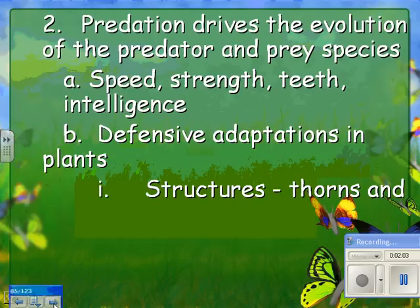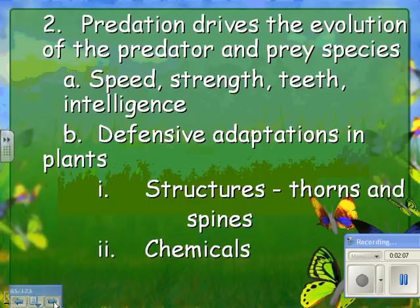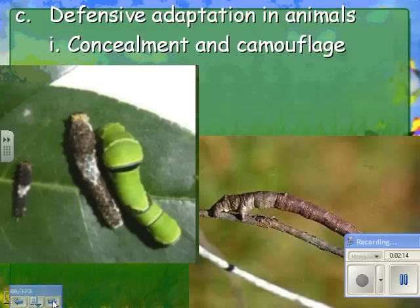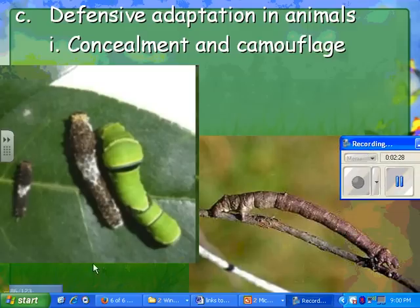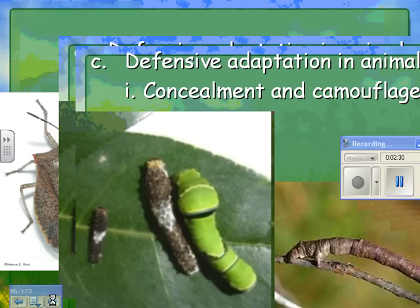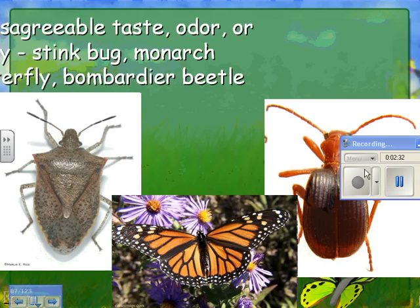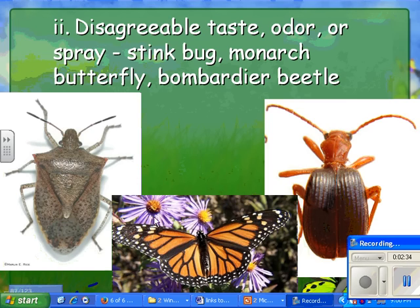Defensive adaptations in plants also occur. There can be structures like thorns or spines, and chemicals such as nicotine or cinnamon that plants produce to deter herbivores. In animals, one defensive adaptation is concealment or camouflage — this caterpillar looks like a turd, and this one looks like a stick.